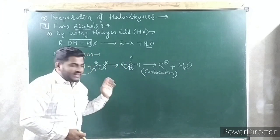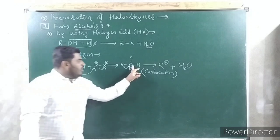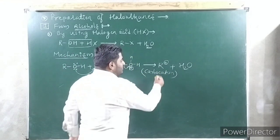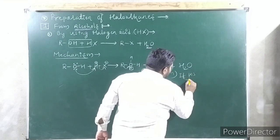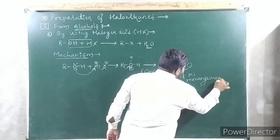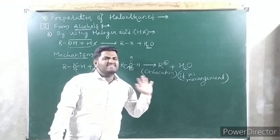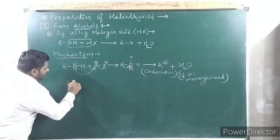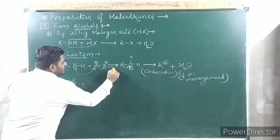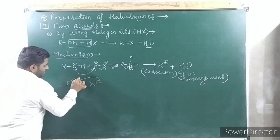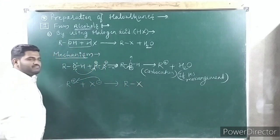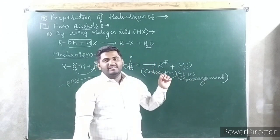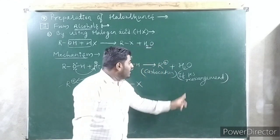Carbocation is formed. If possible, you have to go for rearrangement — very important. In the entire mechanism, you are getting a carbocation intermediate, which means you can go for rearrangement. Next step: this carbocation is attacked by X⁻ — that X⁻ which was eliminated earlier — and it forms RX.